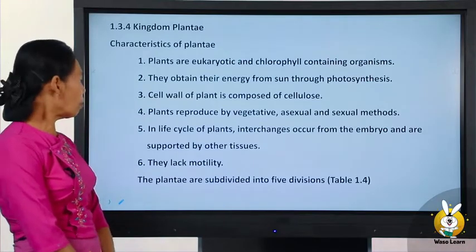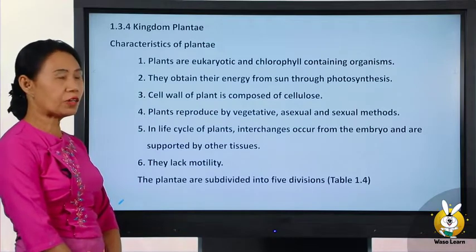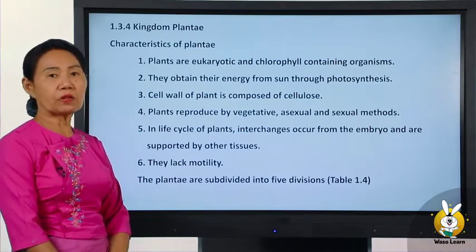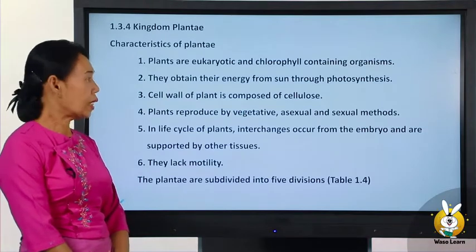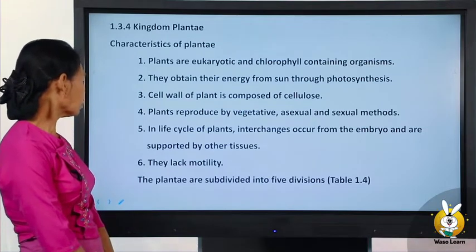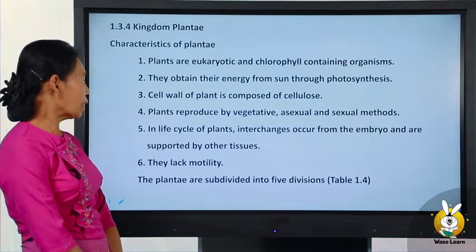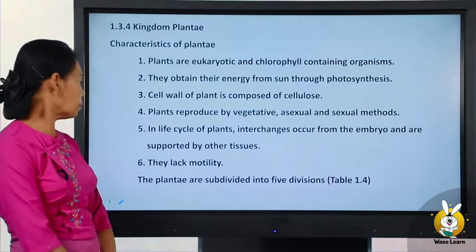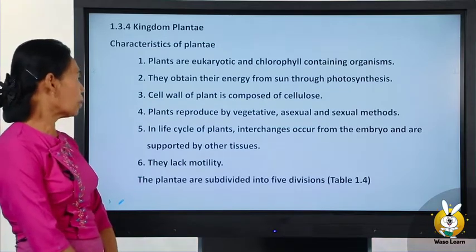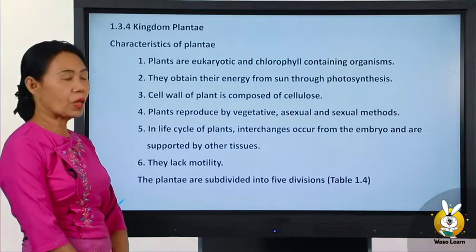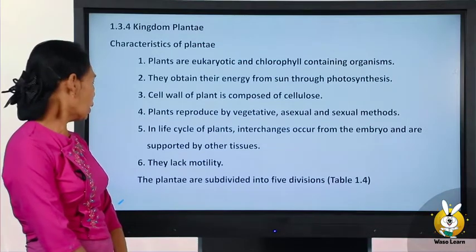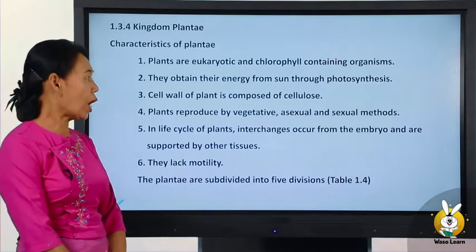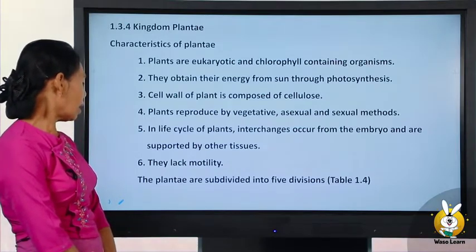Number four, plants reproduce by vegetative, asexual, and sexual methods. Number five, in the life cycle of plants, interchanges occur from the embryo and are supported by other tissues. Number six, they lack motility.